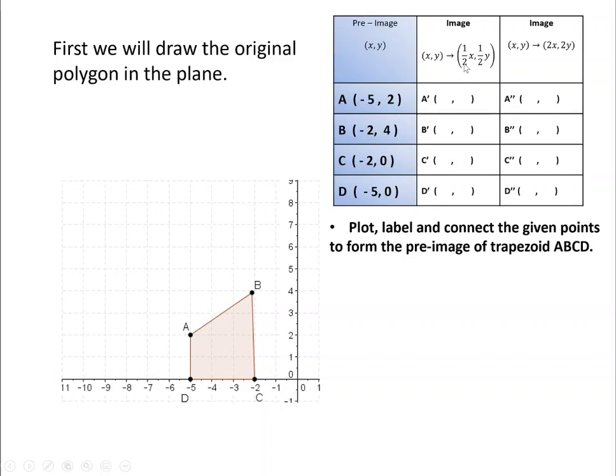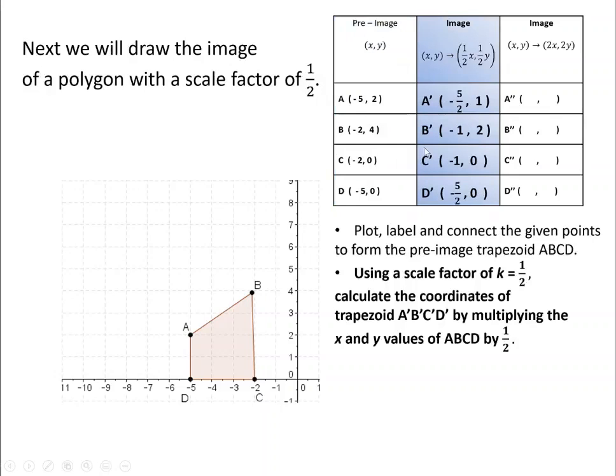Once you have that completed, now they're going to take this image, calling it A prime, and they're going to take half of x and then half of y. So all they're going to do is take your x value and multiply it by one-half, take the y values and multiply it by one-half. So half of negative 5 is negative 2.5, half of 2 is 1, half of negative 2 is negative 1, half of 2 is 4. They're going to go ahead and do all of those. And again, half of 0 is still 0.